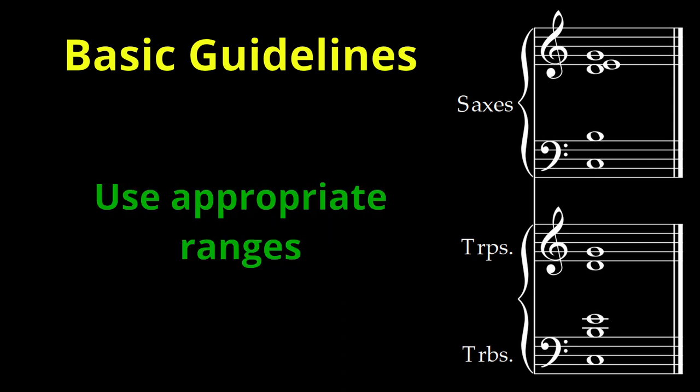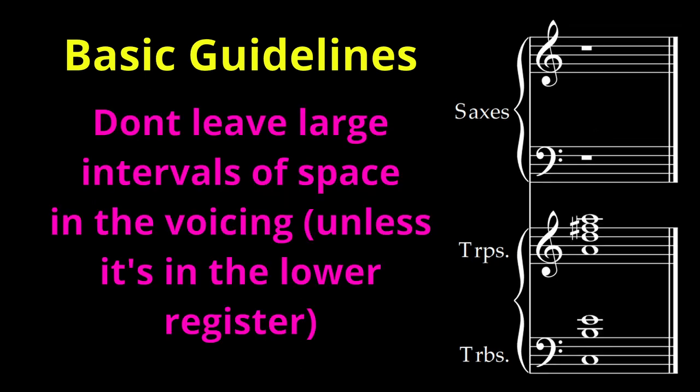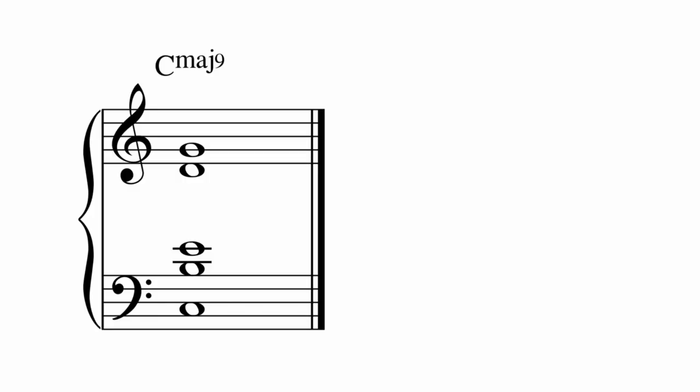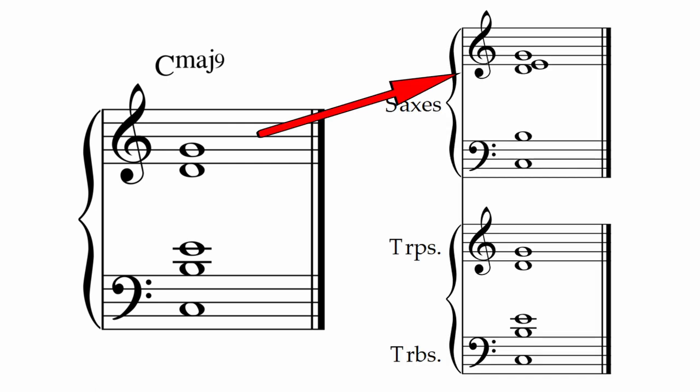Don't write the saxes too high. And don't leave big spaces in the voicing. Let's take a voicing we did earlier and lay it out for big band. This is a nicely contained voicing, so simply taking each of the 5 pitches and assigning them to each saxophone would work well.